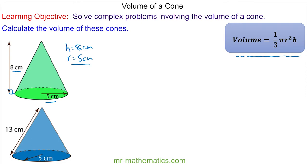We'll put these two values into our formula. The volume is one third of pi multiplied by the radius, which is 5 squared, multiplied by the perpendicular height of 8. So we work out 5 squared times 8, which is 25 times 8, which is 200.